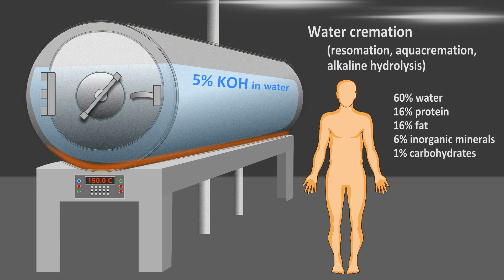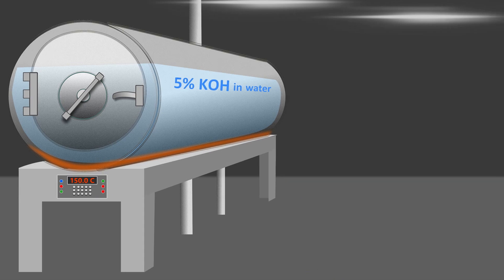The human body is mostly water to begin with, about 60% by weight. A healthy adult is about 16% protein, 16% fat, 6% inorganic minerals—bones and teeth—and 1% carbohydrates.